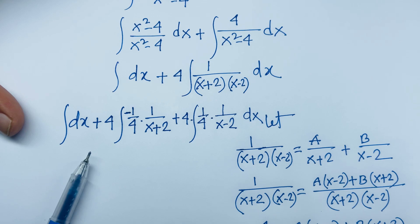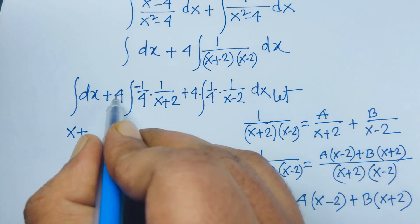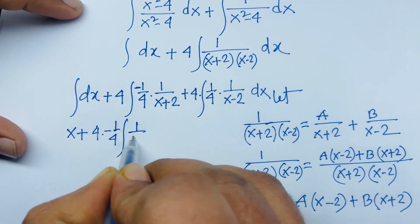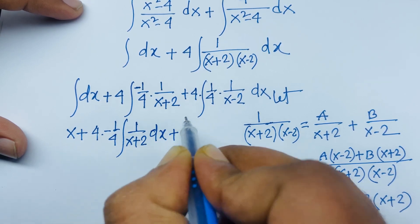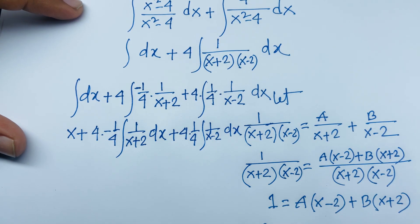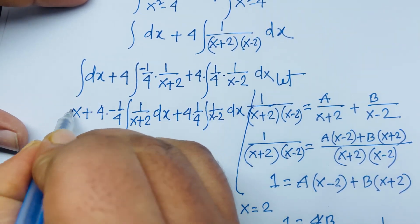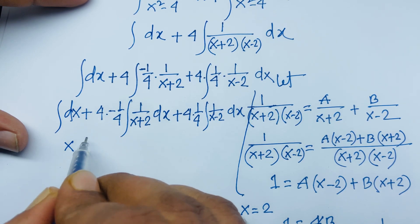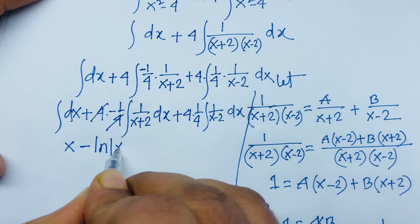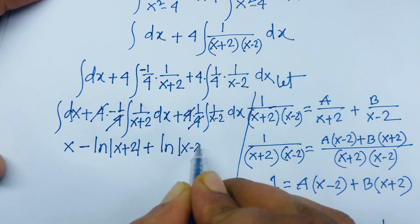Evaluating each integral: the integral of dx is x; the integral of 1/(x+2) dx is ln|x+2|; and the integral of 1/(x-2) dx is ln|x-2|. So the final answer is x minus ln|x+2| plus ln|x-2| plus C. This is our final answer.